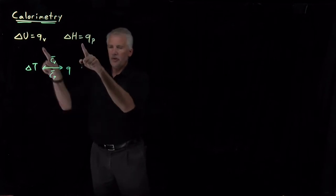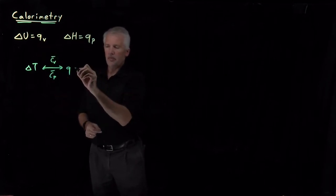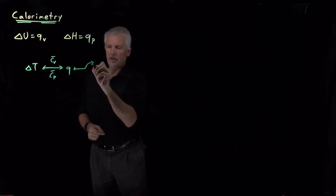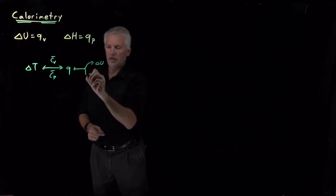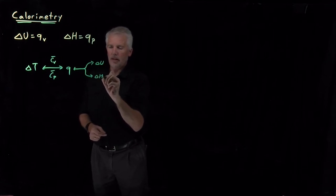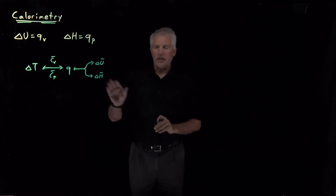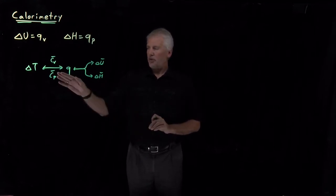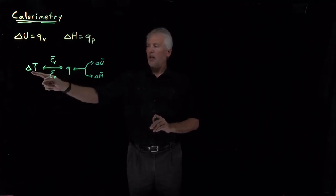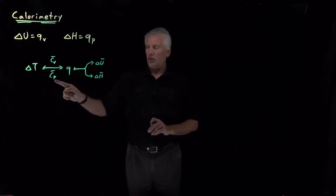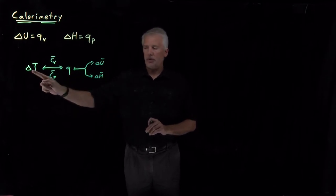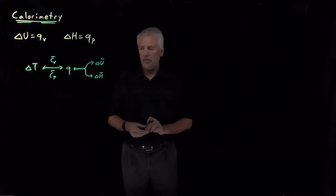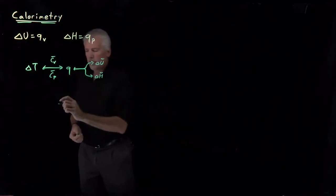Using these two expressions, we can relate that heat either to the internal energy or the enthalpy depending on whether we've done the process at constant volume or constant pressure. So those two types of processes — do something at constant volume and use the temperature increase or decrease to tell us something about the energy, or do something at constant pressure and use that temperature increase to tell us something about the enthalpy. Those are calorimetry experiments.